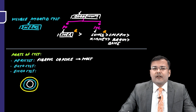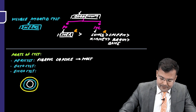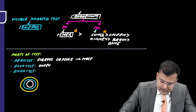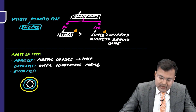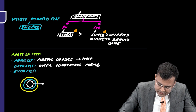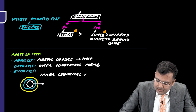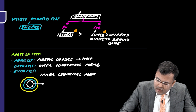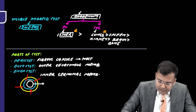The endocyst and ectocyst are parts of the parasite. The ectocyst is the outer gelatinous membrane, and the endocyst is the inner germinal membrane. Nutrition reaches the cyst from the pericyst region via diffusion.